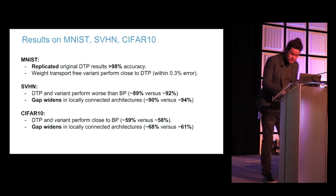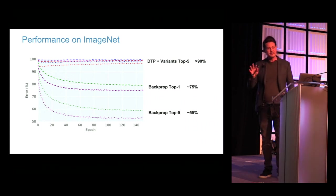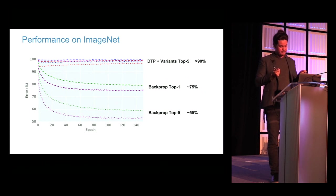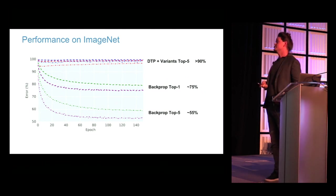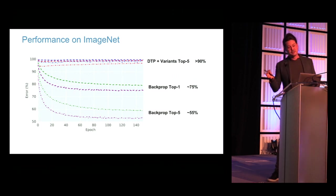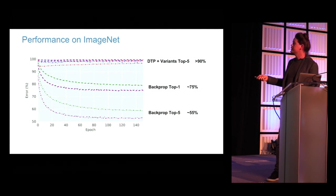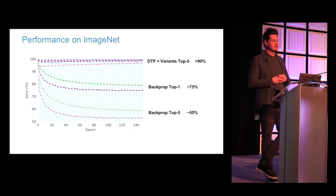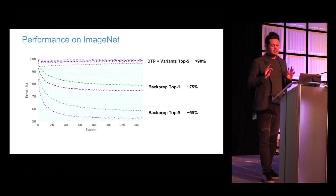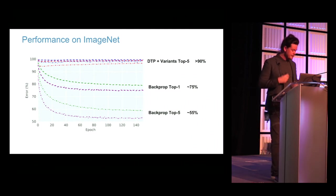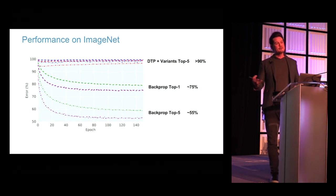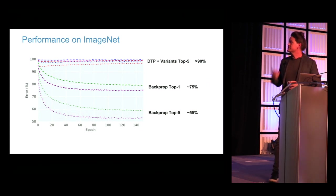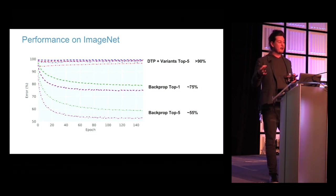What happens when you go to ImageNet? This was what I considered the most promising of the biologically motivated algorithms. In our hands, with a fair bit of hyperparameter search, this is the picture for a relatively small network — simpler and smaller than AlexNet. Backprop for top-1 and top-5 performance sits at a reasonable level, while DTP and all variants we tried are effectively hopeless. This was a wake-up call: we have to try these things at scale where depth matters and where credit assignment through depth really matters.